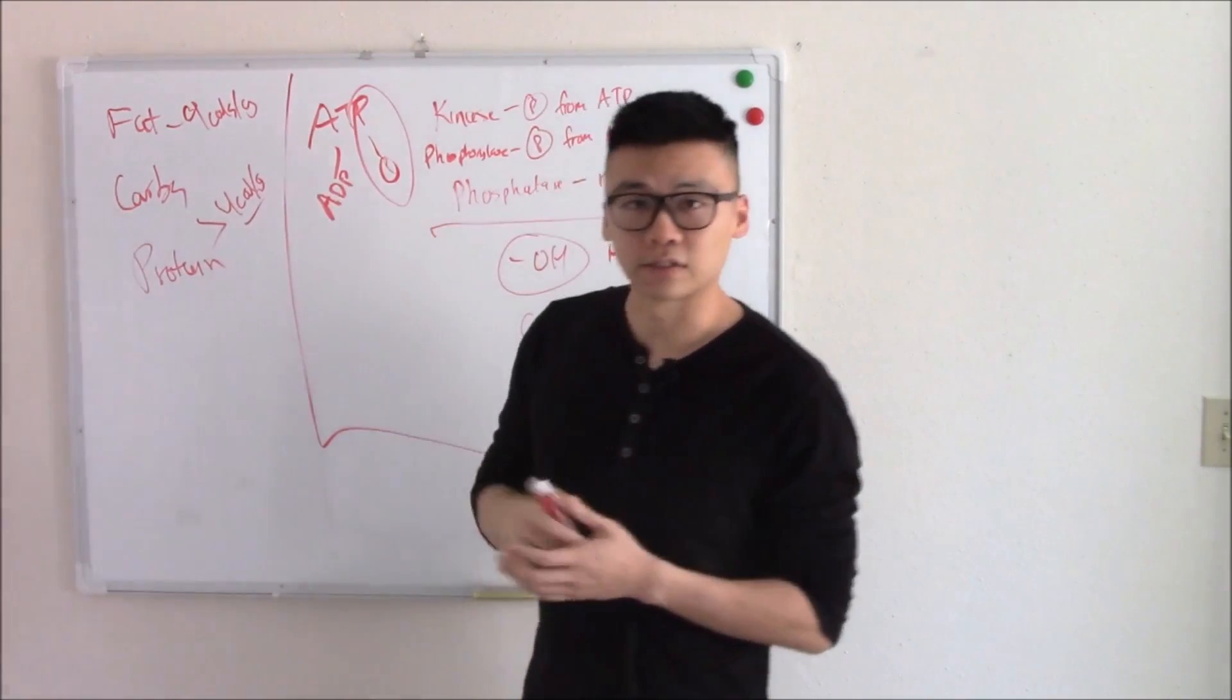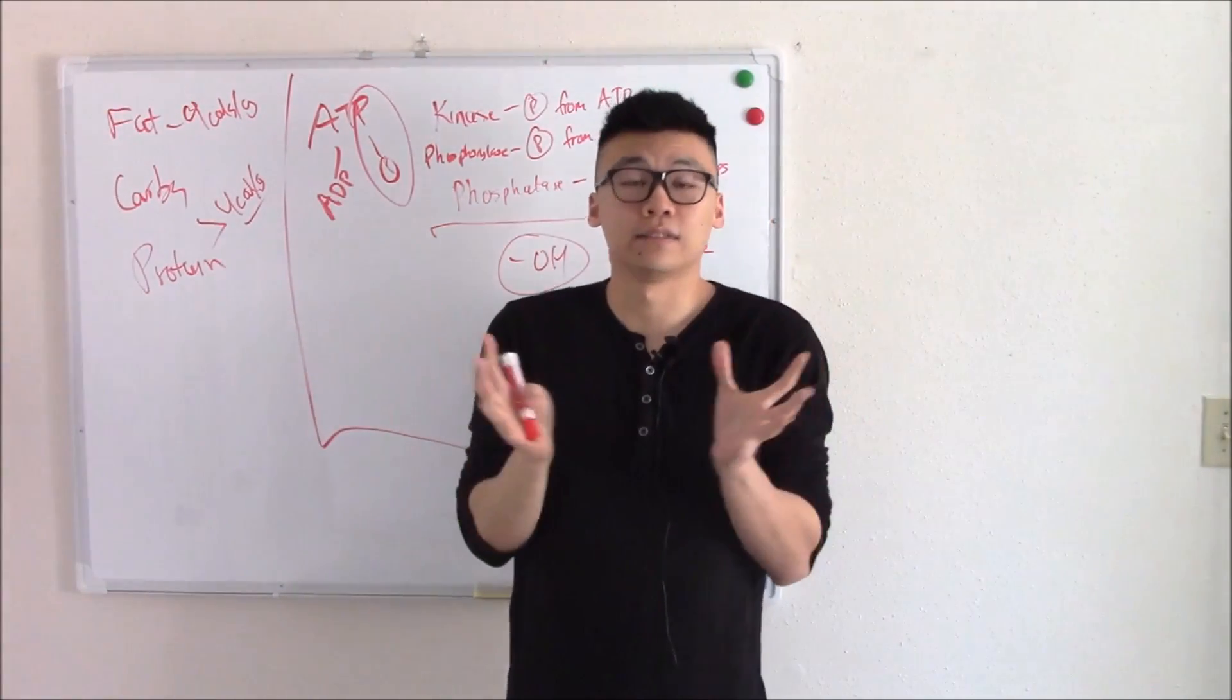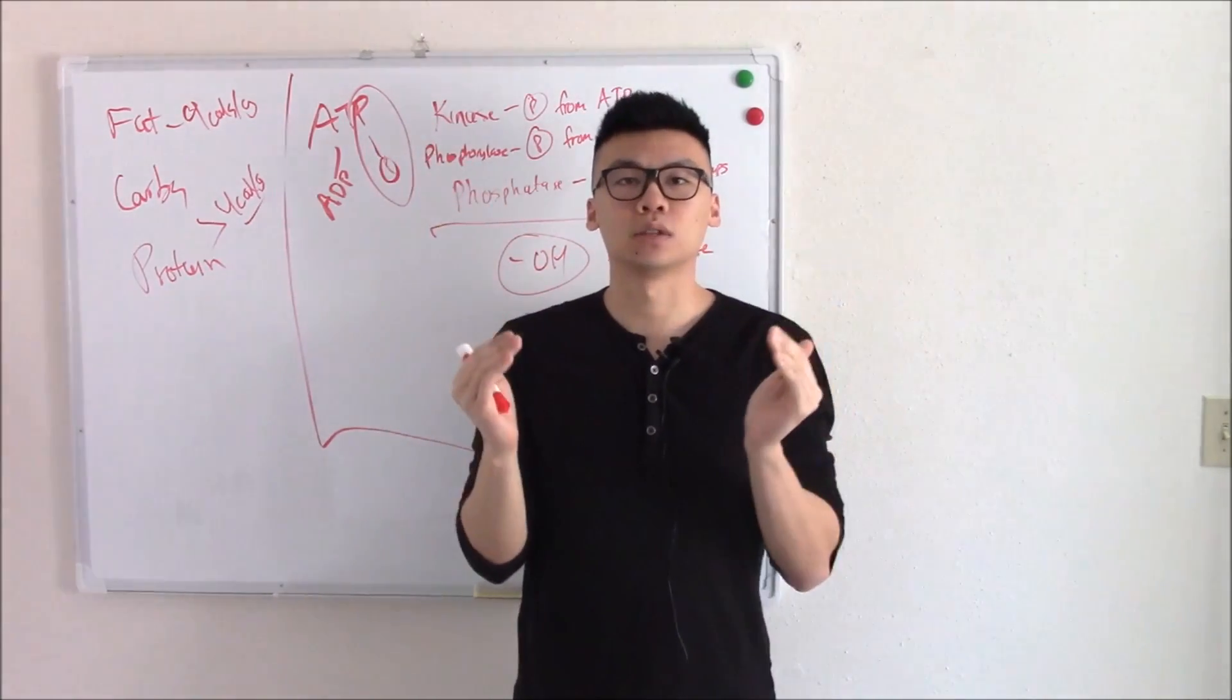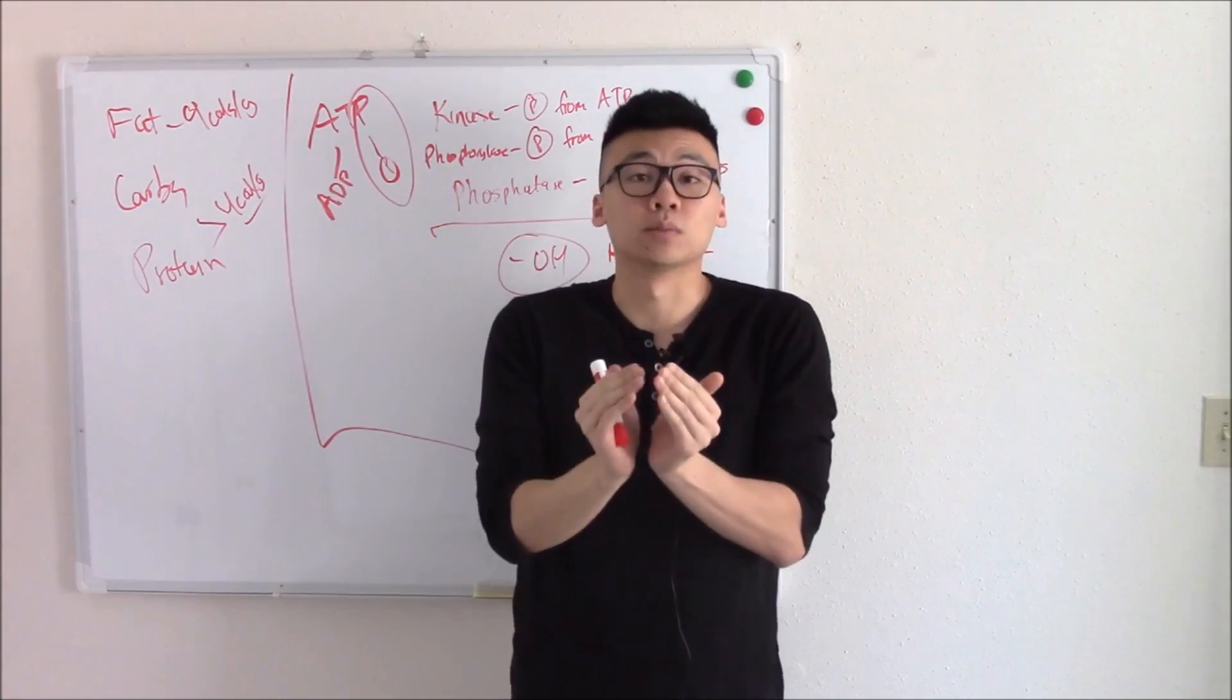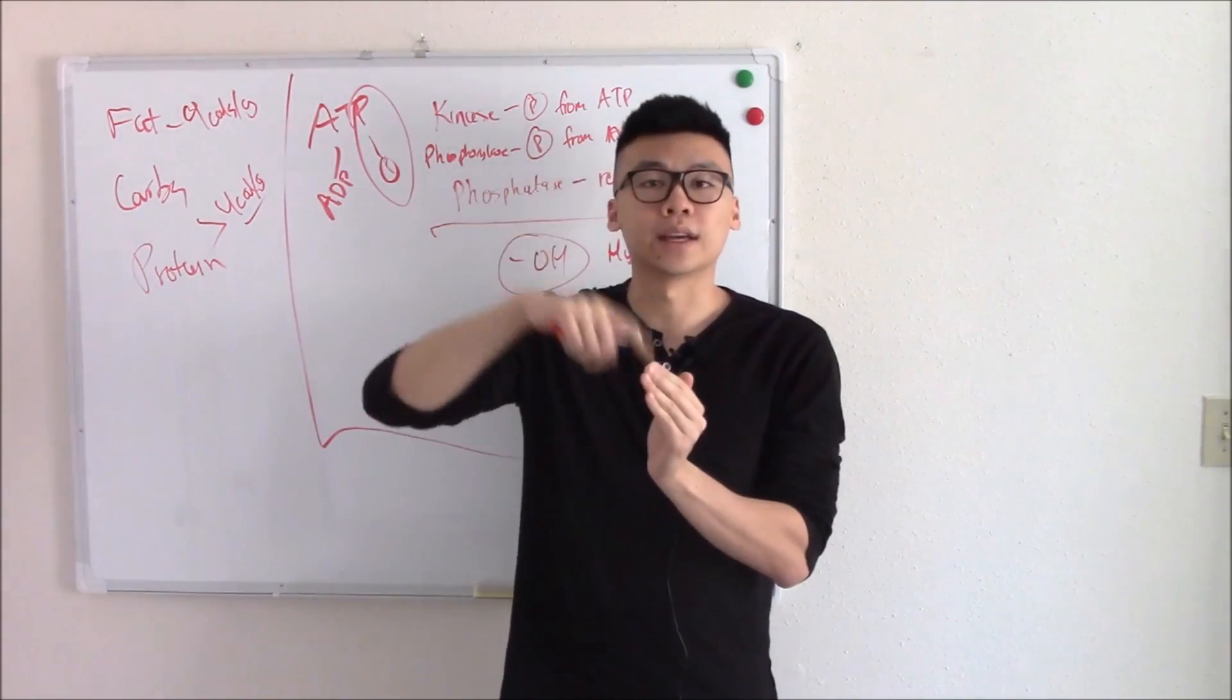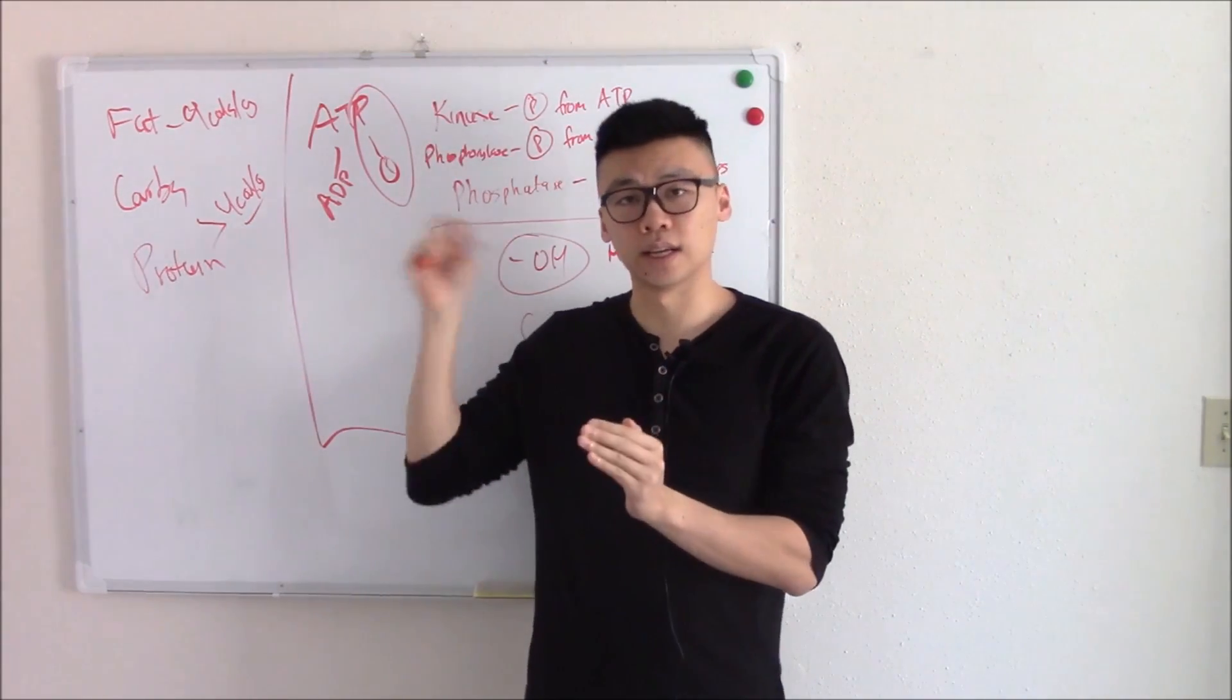We said they're all structurally different. How can they all then give ATP? Well, when you ingest them, your body will break it down into this building block, this common denominator. And from that common denominator, it can make anything, including ATP.